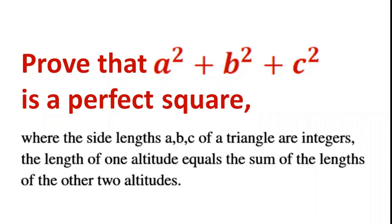Prove that a squared plus b squared plus c squared is a perfect square, where the side lengths a, b, c of a triangle are integers, and the length of one altitude equals the sum of the lengths of the other two altitudes.